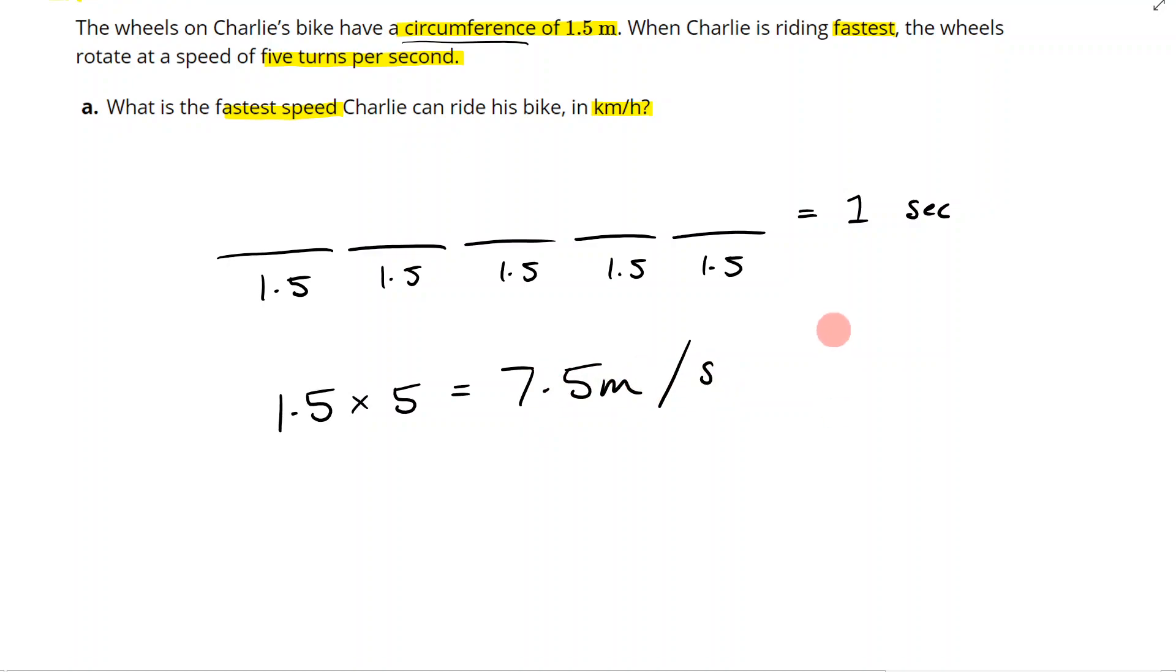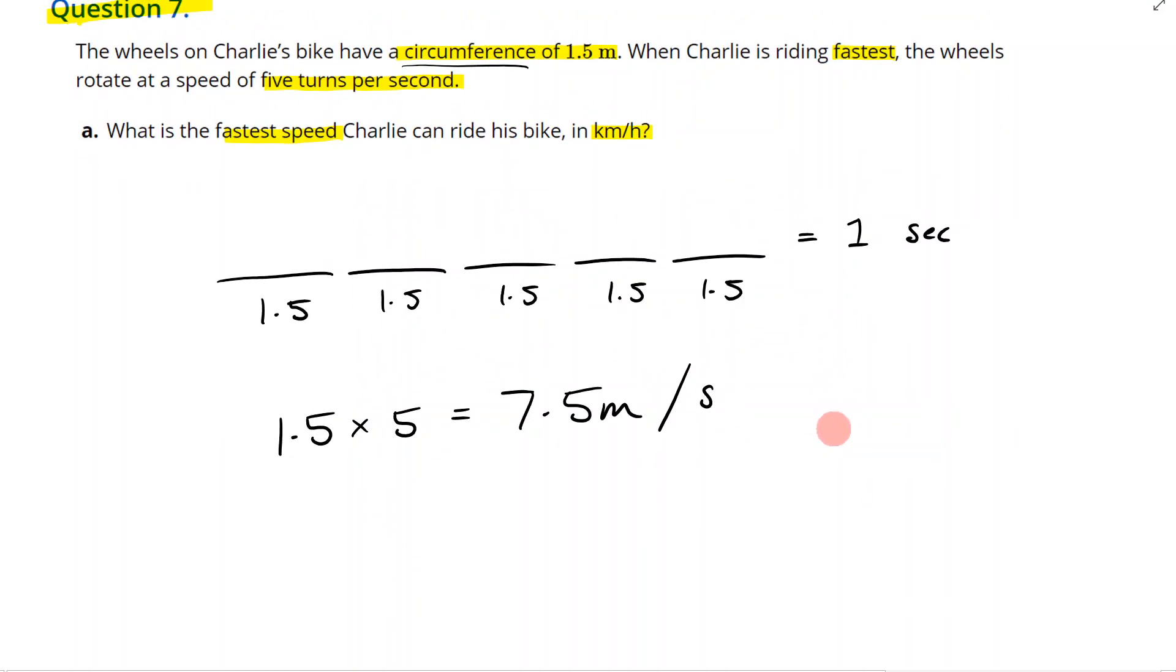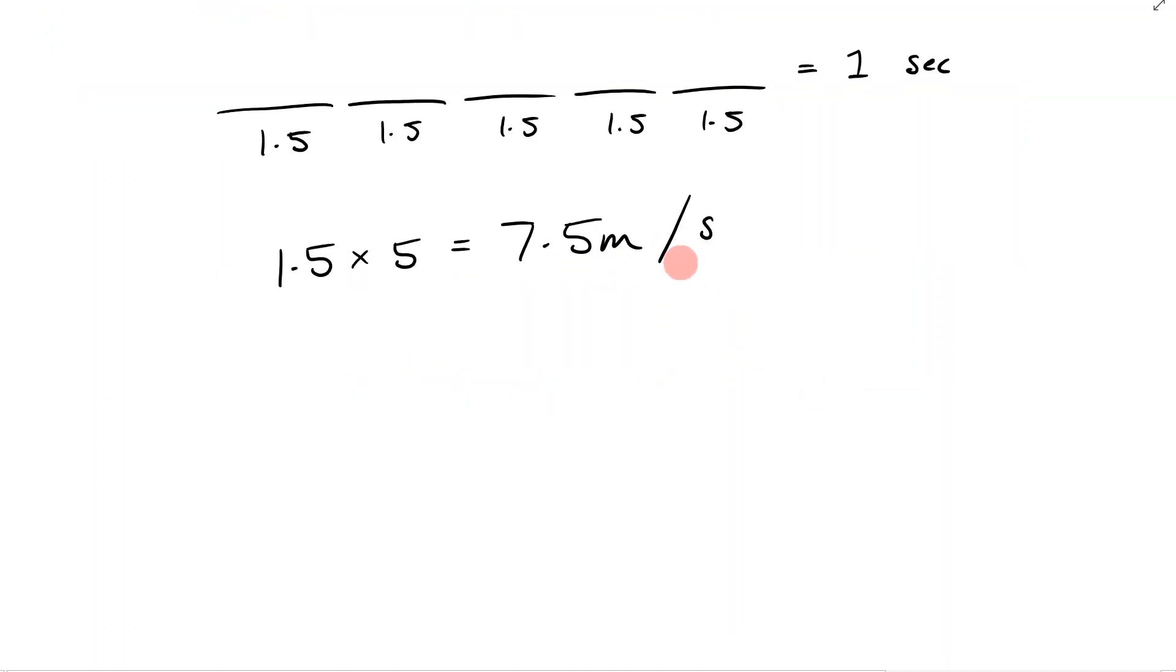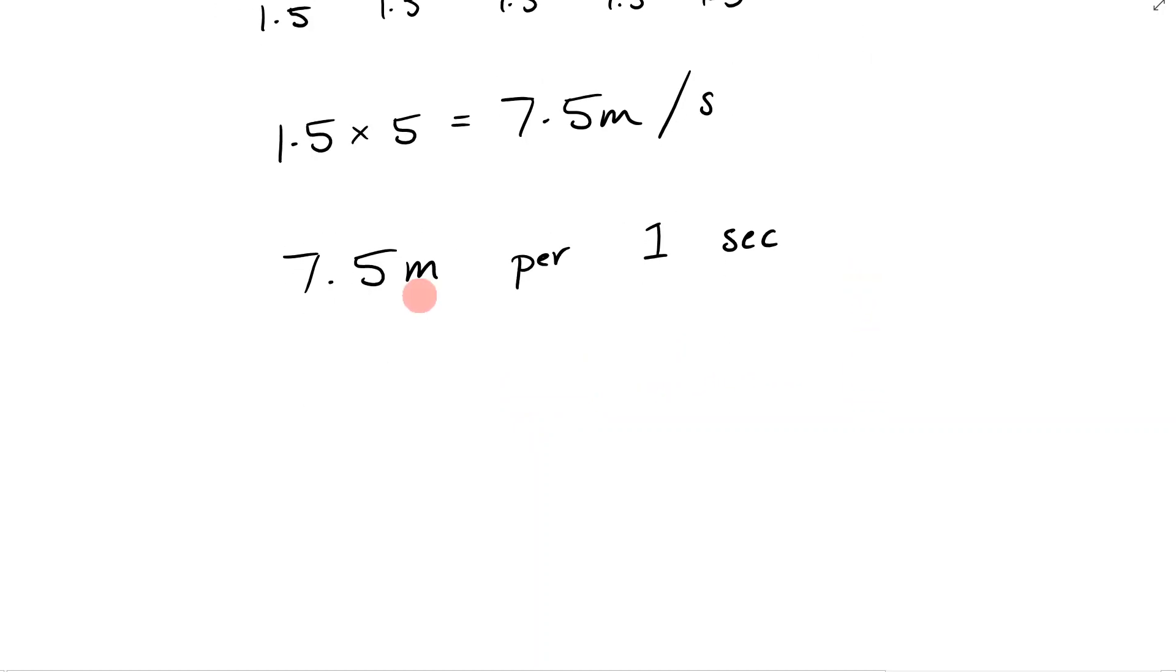Now I can't leave my answer like that because it wants it in kilometers per hour. So at the moment I have meters and seconds, so that's not what we want. Let me write this as 7.5 meters per one second. I'm just writing it out slowly, and now I need to change this to kilometers and I need to change this to hours.